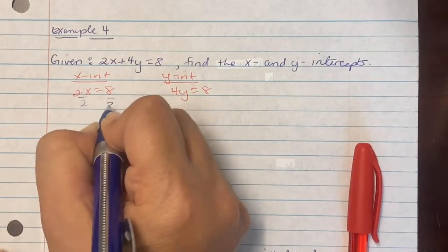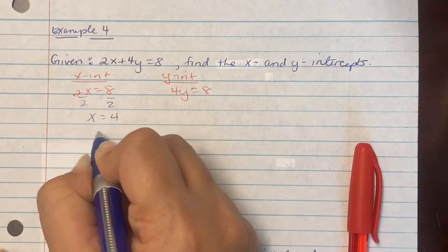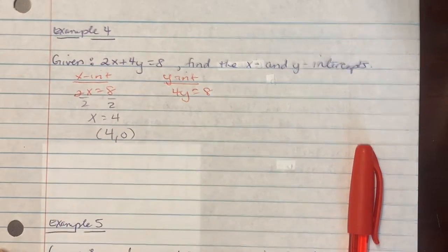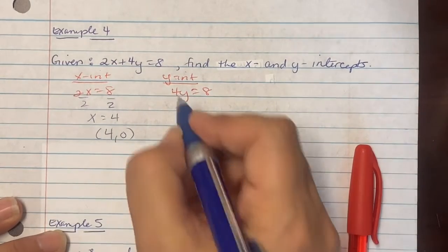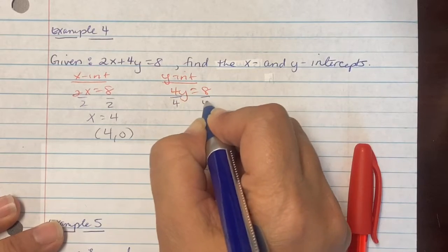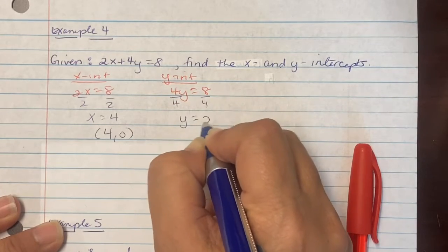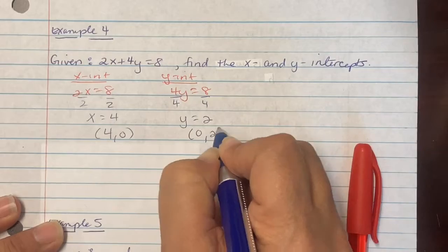Divide both this first one by 2. So x is equal to 4. You're at (4, 0). Divide the second one by 4. So y equals 2. We're at (0, 2).